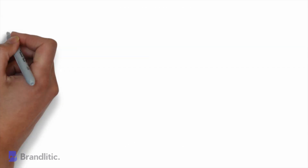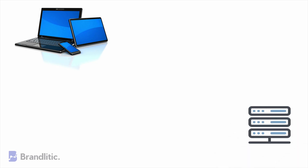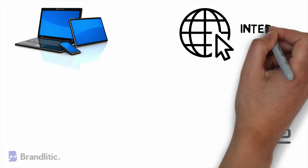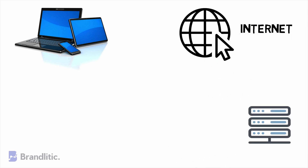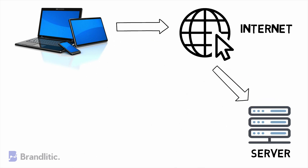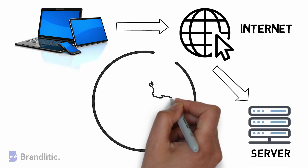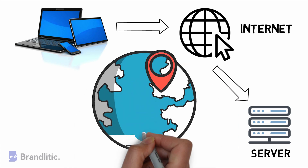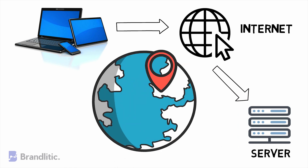In simple terms, a VPN connects your PC, smartphone, or tablet to another computer called a server somewhere on the internet, and allows you to browse the internet using that computer's internet connection. So if that server is in a different country, it will appear as if you belong from that country on the internet, and you can potentially access things that you could not normally access from your current location.